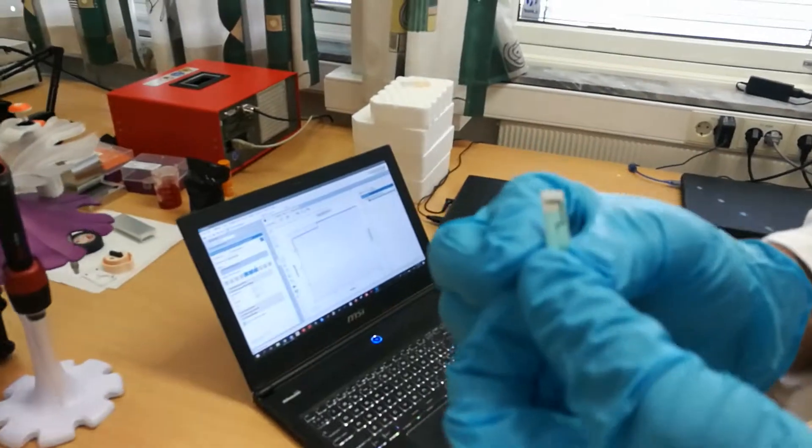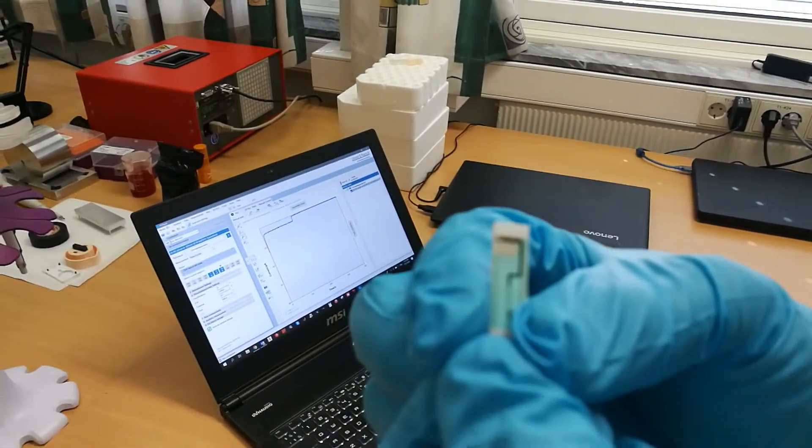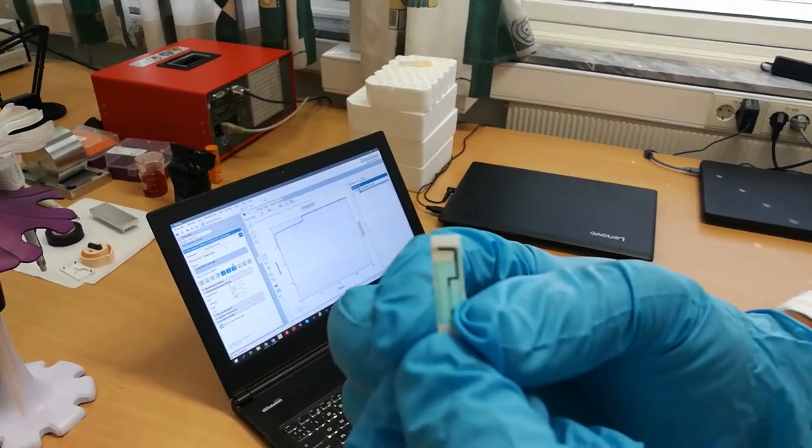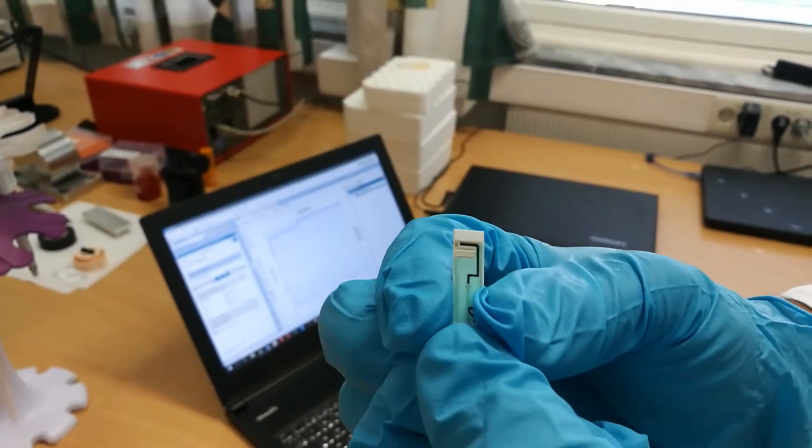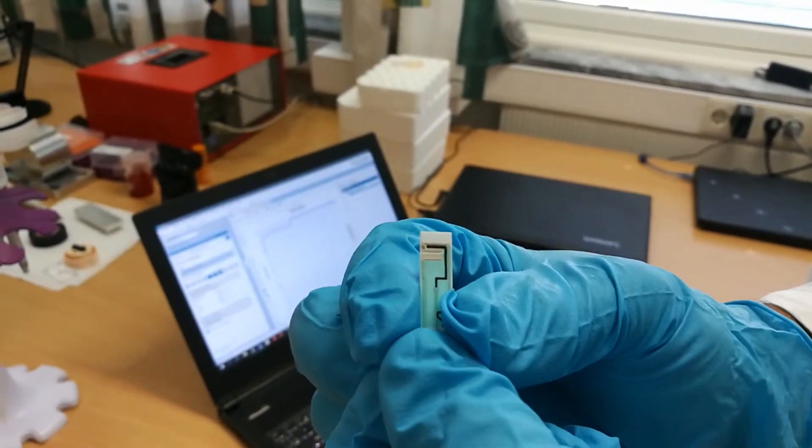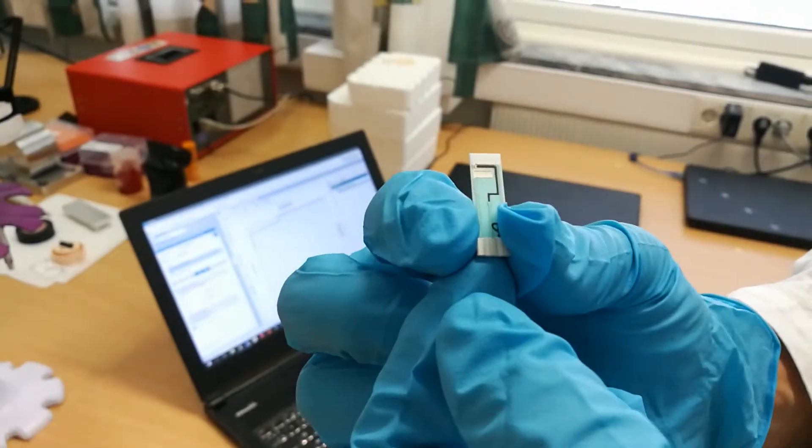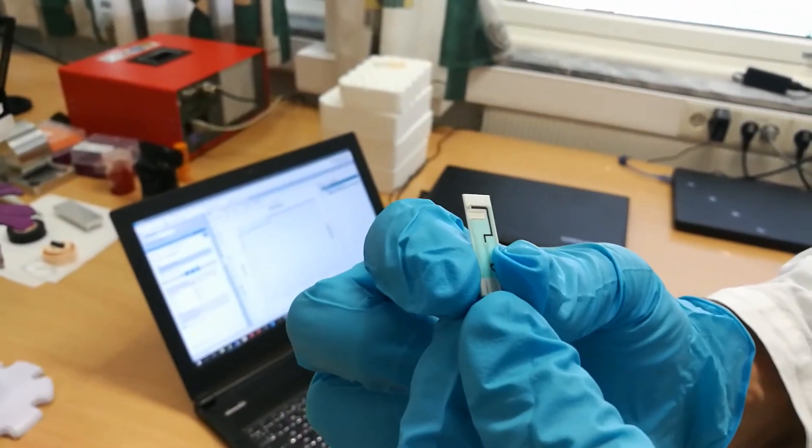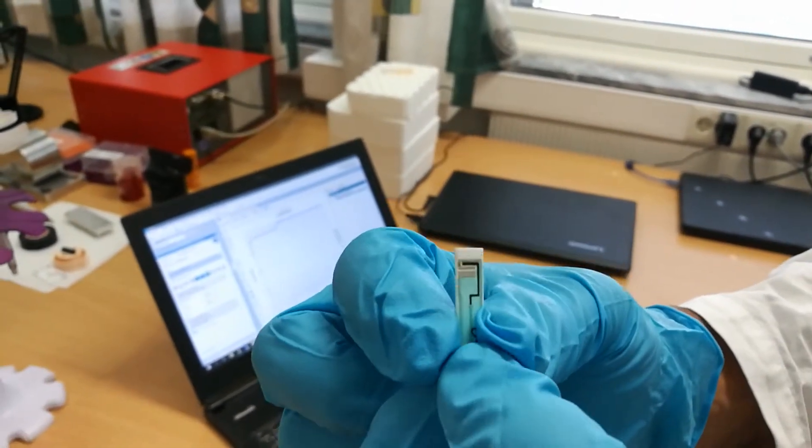This is a screen-printed sensor with three electrodes. The working electrode is the dark one made of carbon. Then you have the reference and counter electrodes which are made of silver silver chloride, as well as the pads, contact pads, and the conductive tracks.